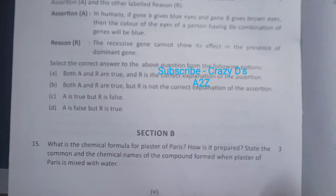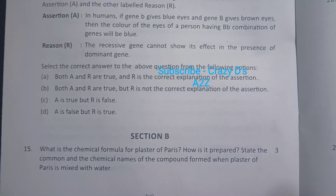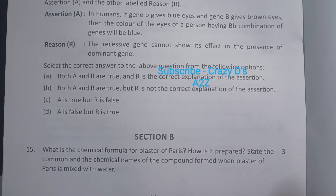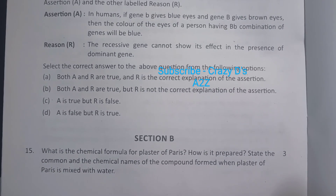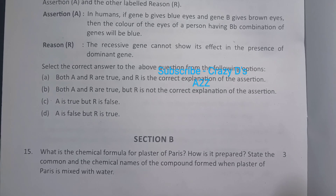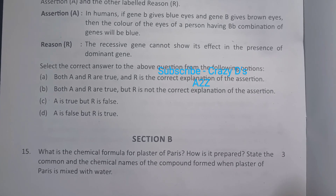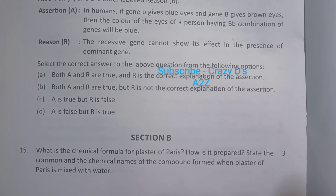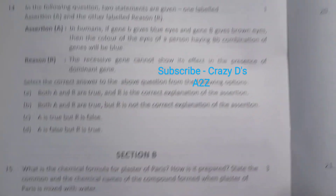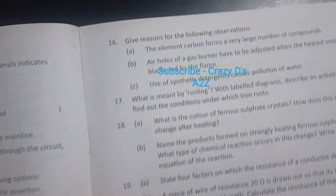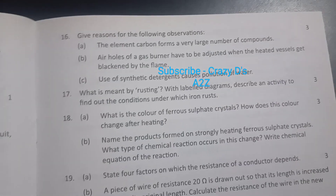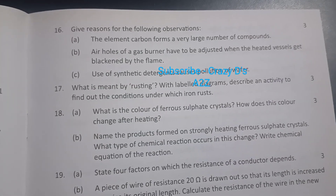Here in section B: what is the chemical formula for plaster of Paris? How is it prepared? State the common and chemical name of the compound formed when plaster of Paris is mixed with water.